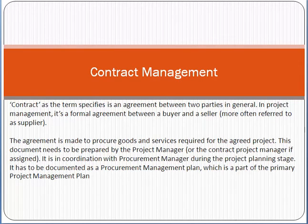Now, contract management means the following: for example, you have a company and you want to purchase something, and there is a vendor who can sell something. So a contract can be made between the buyer and the seller. The buyer is the person who wants to purchase the services, and the seller is the vendor who wants to sell those services.